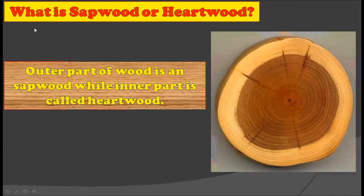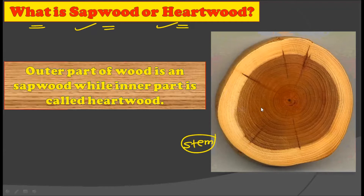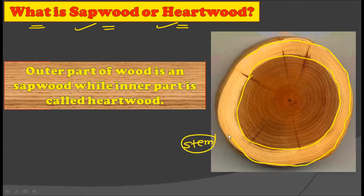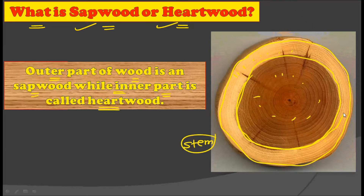Now let's see what is meant by sapwood and hardwood. In this picture you are seeing a typical stem, which is divided color-wise into two parts. The inner part is a dark color while the outer part is lighter. In a stem with secondary growth you often find this composition. The outer part of a wood is called sapwood, while the inner darker portion is called hardwood.